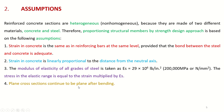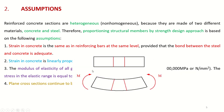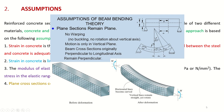This assumption means that when the beam deforms under external applied loads, the plane section which was plane before bending remains plane after bending. This can be seen from the figure: the rectangular blocks in the cross-section remain rectangular after bending, confirming that plane sections remain plane.